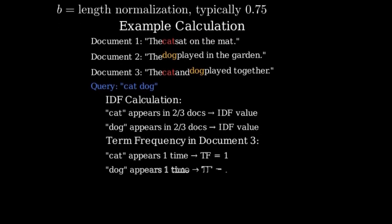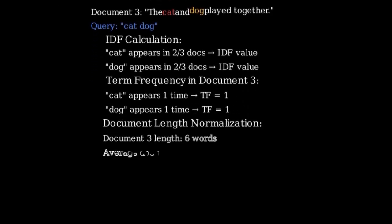Next, we calculate the term frequencies. In Document 3, cat appears once, so its TF is 1. In Document 3, dog appears once, so its TF is 1.